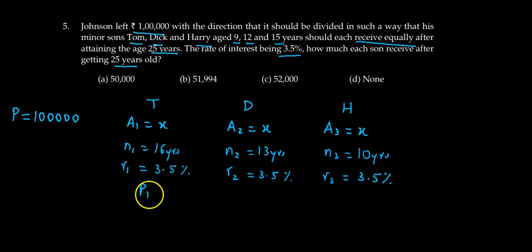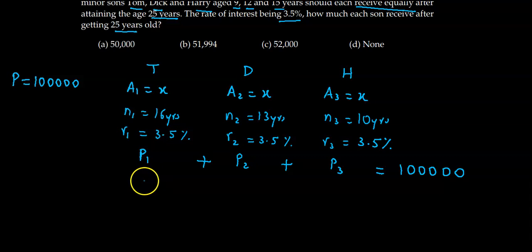The present value of this amount plus the present value of this amount plus the present value of this amount, these three present values combined should be 1 lakh, because 1 lakh has been invested. The total present worth should be 1 lakh, and we know how to calculate the present worth.